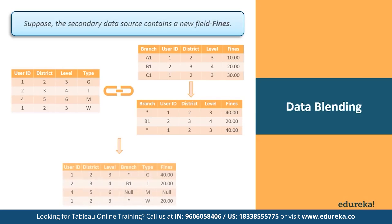In this case, you see the same null value and asterisks from the previous example, in addition to two things: because the fines field is a measure, you see the row values for the fines field aggregated before the data in the right table is combined.